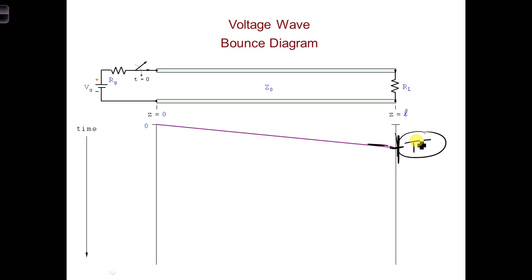Also we can label the amplitude of this wave using a voltage divider at the generator. This is all stuff you've seen before, we're just showing it now on a bounce diagram.